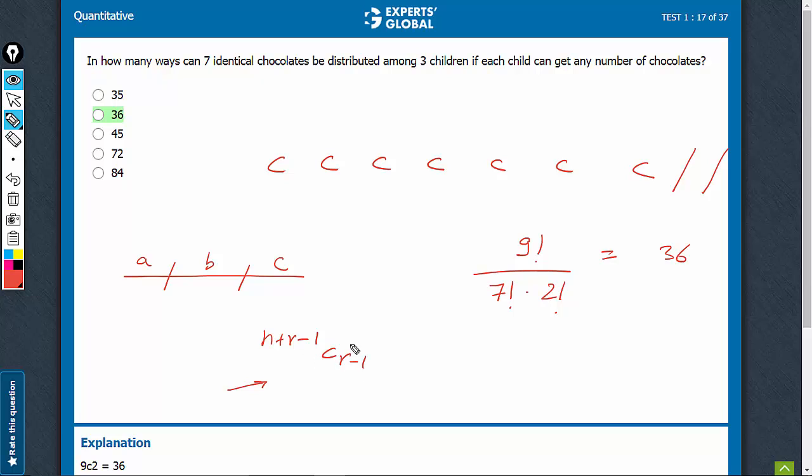There is a relationship also. This way you can see it would be 7 plus 3 minus 1, C 3 minus 1. So that's 9C2, that's ought to be 36.